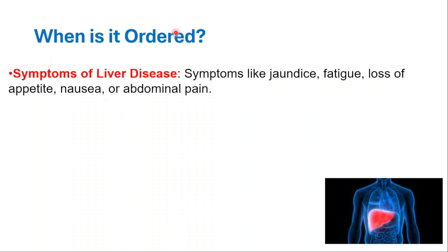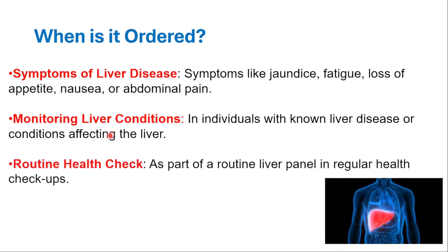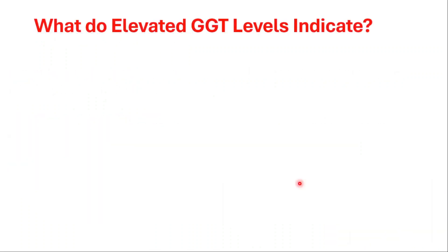When do we order a GGT blood test? When we see symptoms of liver disease — symptoms like jaundice, fatigue, loss of appetite, nausea, or abdominal pain — to monitor liver conditions in individuals with known liver disease, or as part of a routine liver panel in regular health checkups.